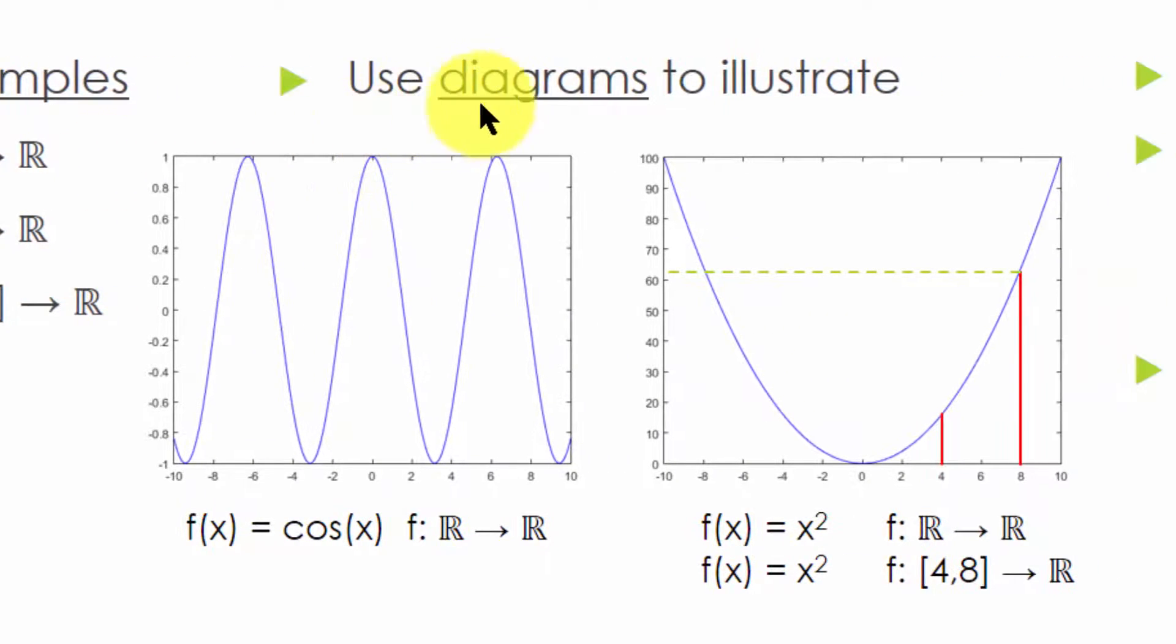Here we can use our second technique, diagrams. So this figure plots f(x) equals cosine x in the interval from minus 10 to 10. Of course, its real domain is from minus infinity to infinity. Here we can see that it is bounded above by the real number 1. But the real numbers 2, 2 and a half, 1000 are also its upper bounds.